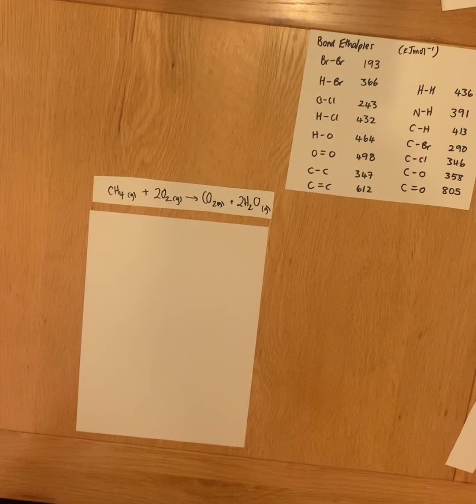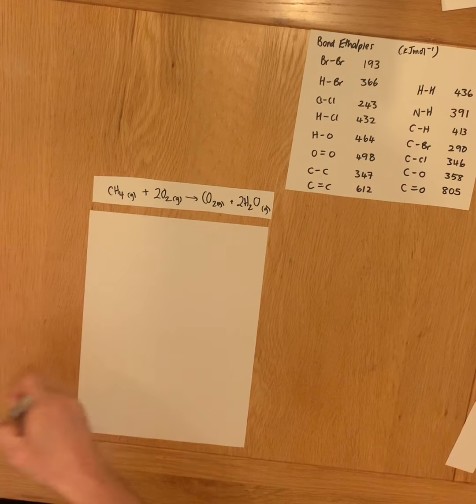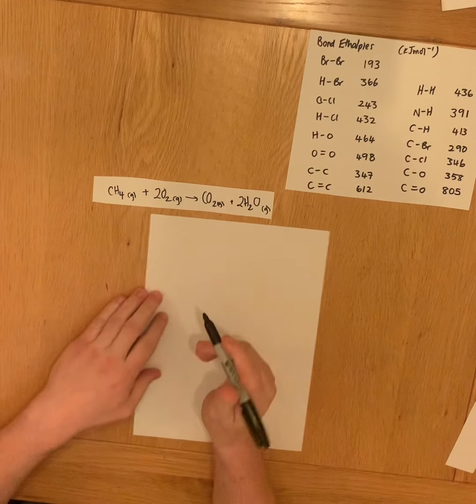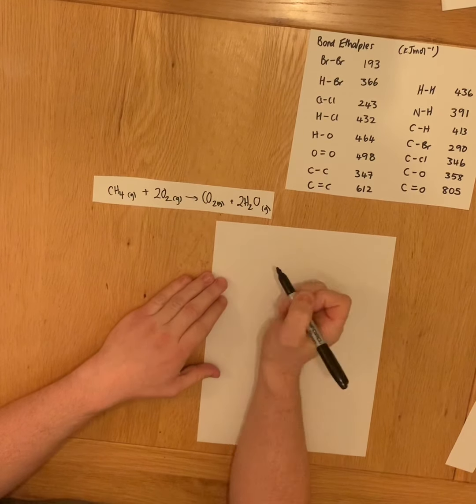GCSE standard, if you remember, if you're just using bond enthalpies you just need to add up the sum of the bonds that are going to be broken.